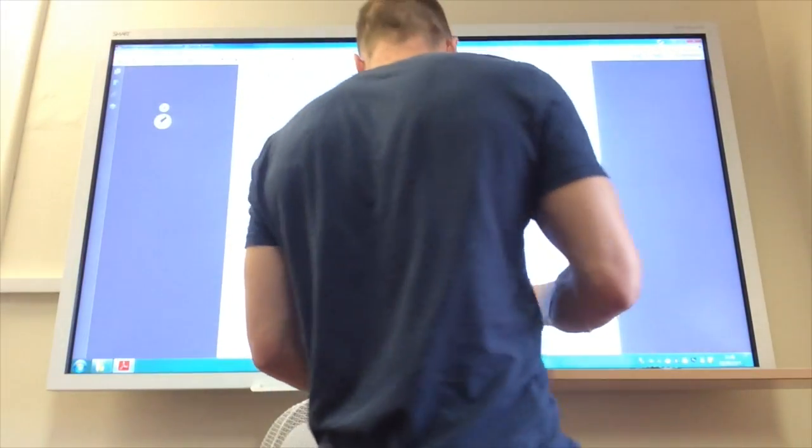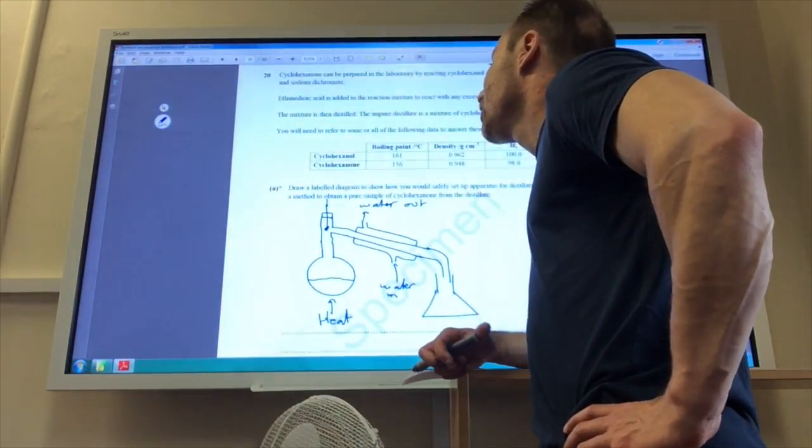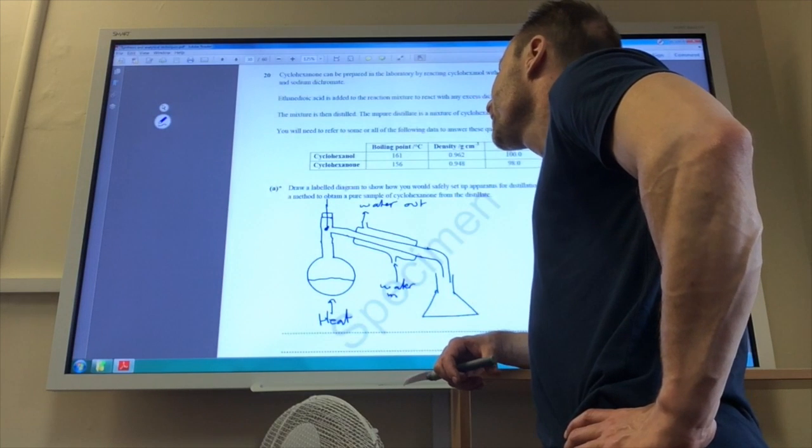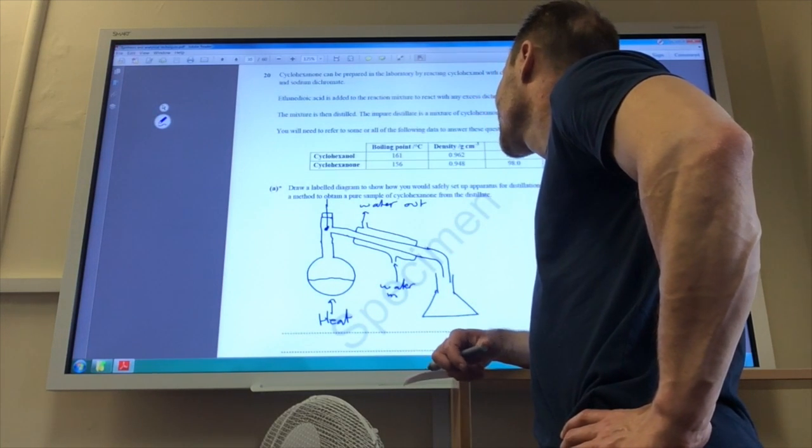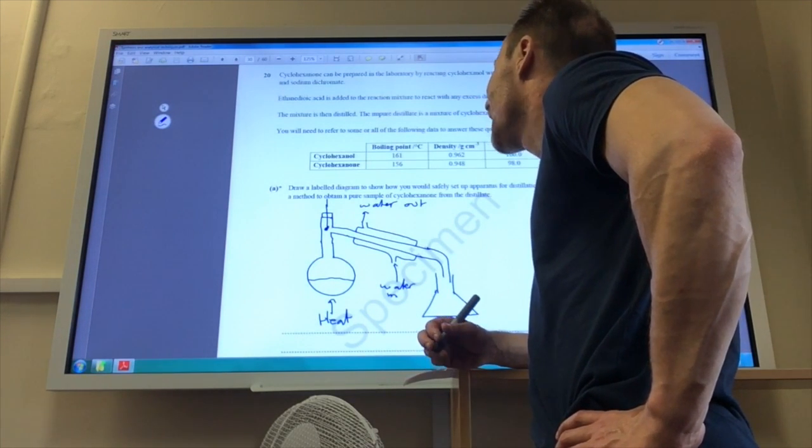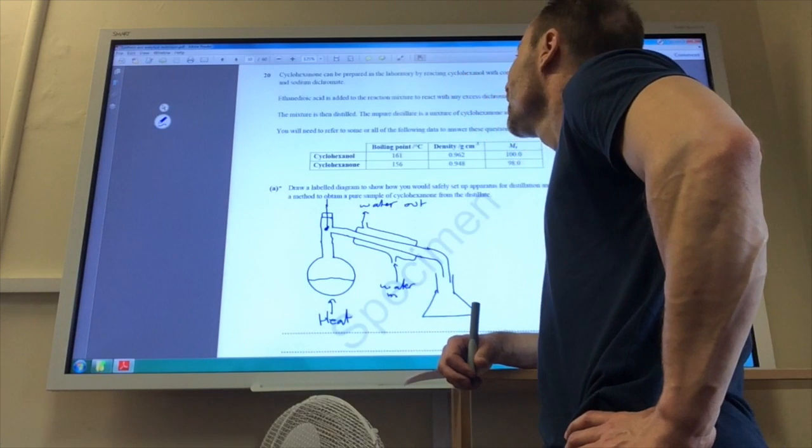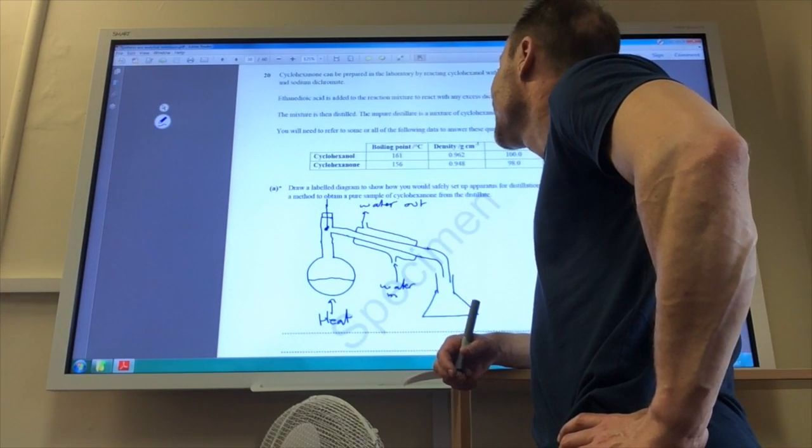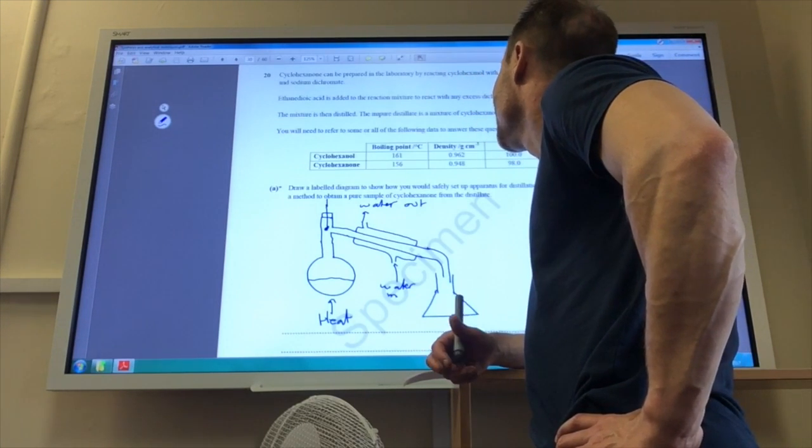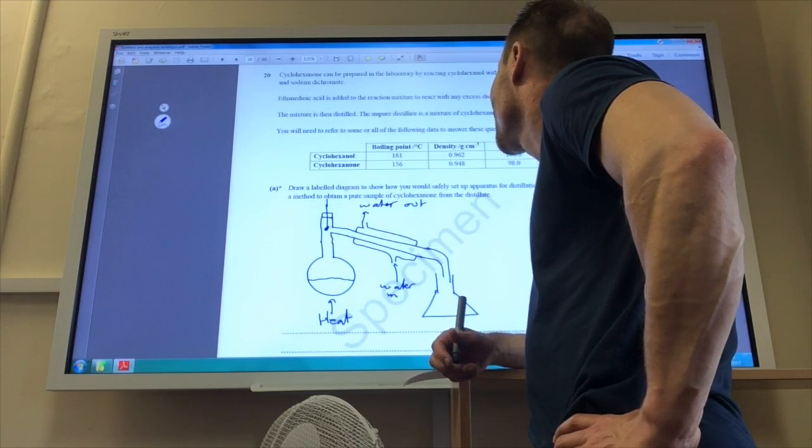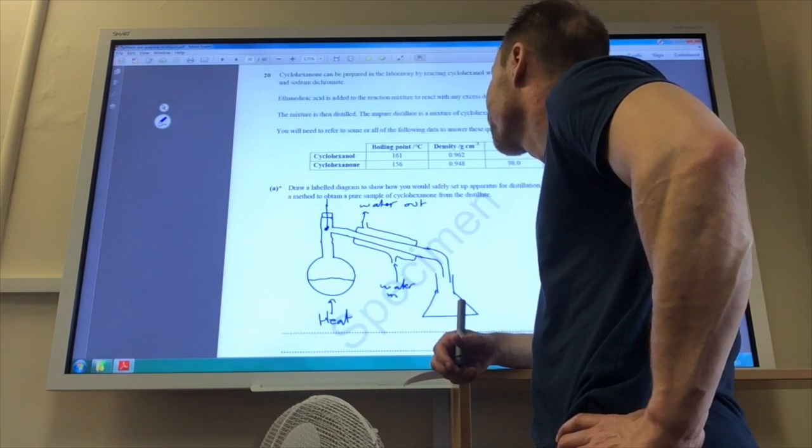Ok, so this is one where we are going to ask you about experimental procedures. So first of all, draw a labelled diagram to show how you would safely set up this apparatus to distill off the cyclohexanone and water.